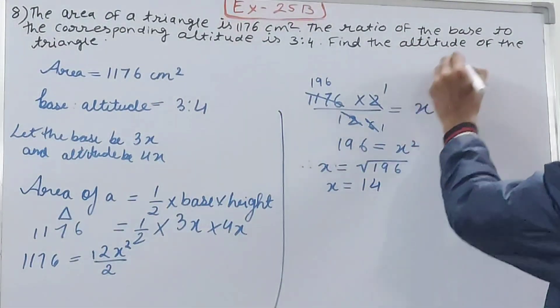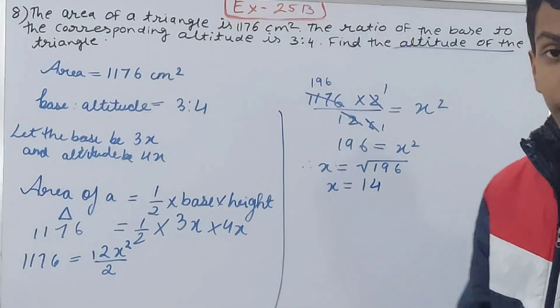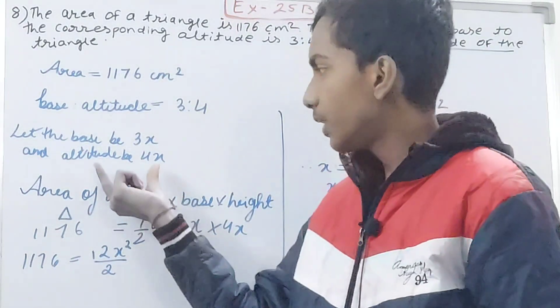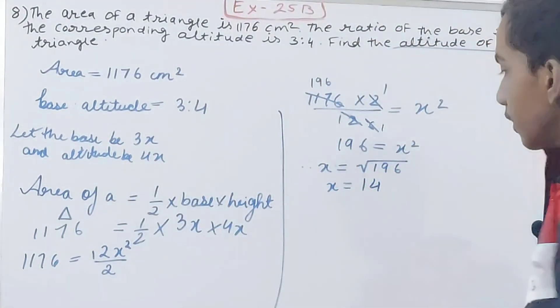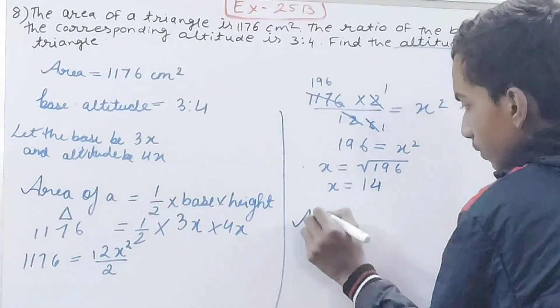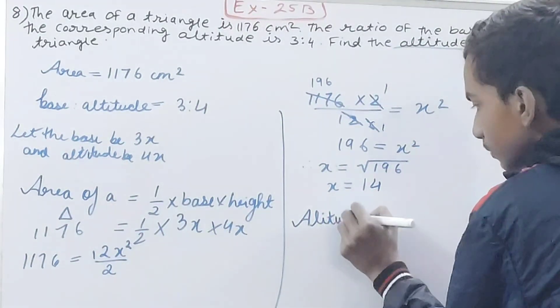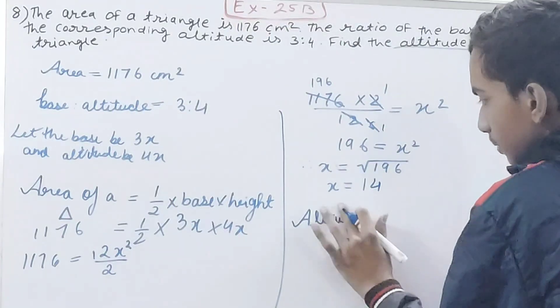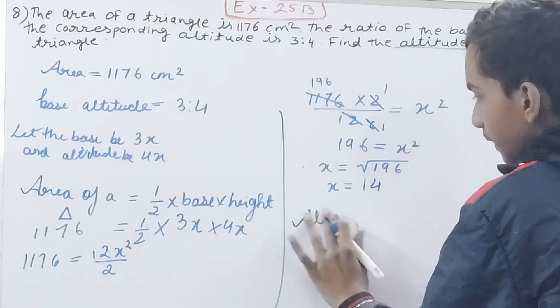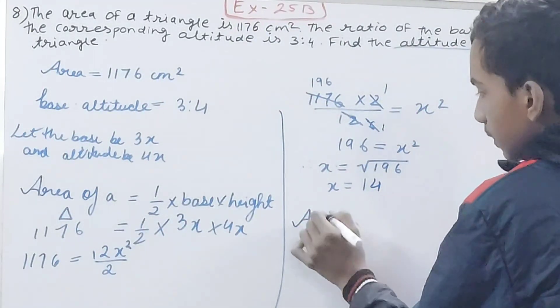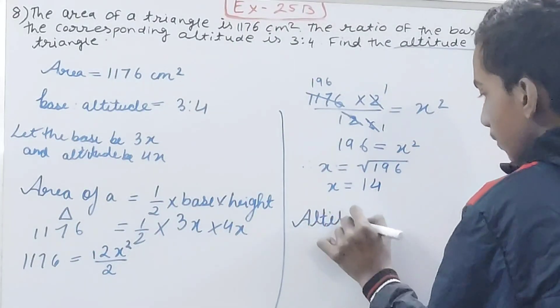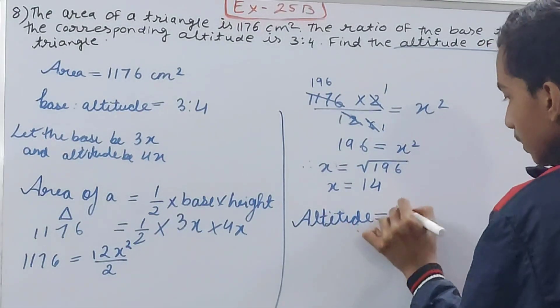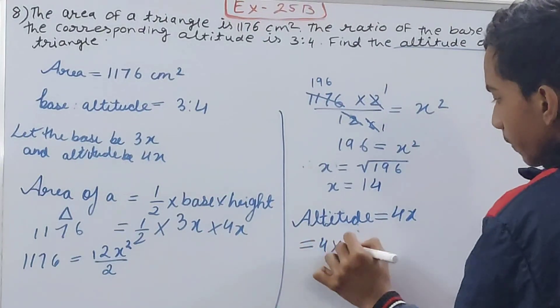And what is asked? Find the altitude of the triangle. What did I assume my altitude as? 4x. So the altitude is 4x which is 4 into 14, that's 56 centimeters.